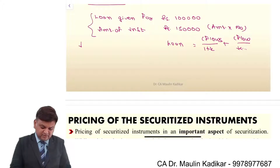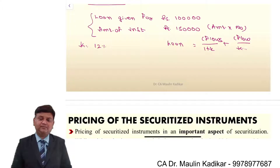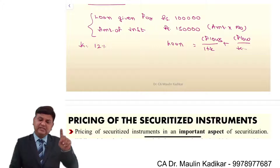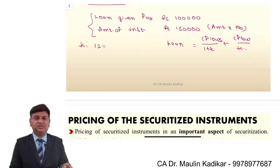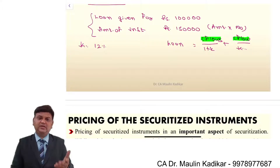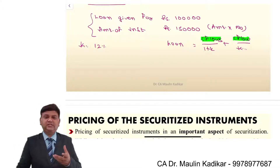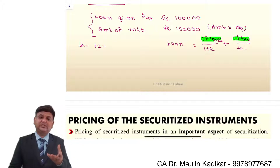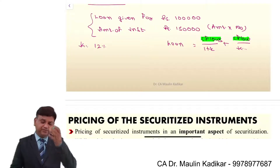Initially when the loan is given, the rate of interest is 12%. When the special purpose vehicle is issuing the security, in that case these cash flows are discounted at a lower rate. Why a lower rate? For that we have understood the examples and the logic.